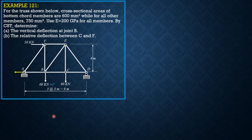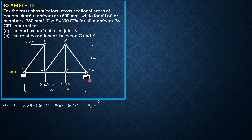Summation of forces in X equals 0, giving 50 kN. Then, summation of moments about D equals 0: AY times 9, plus 50 times 4, minus P times 6, minus 80 times 3. So AY in terms of P equals two-thirds P plus 40 over 9. Take note that P equals 60. Then RD equals one-third P plus 680 over 9.